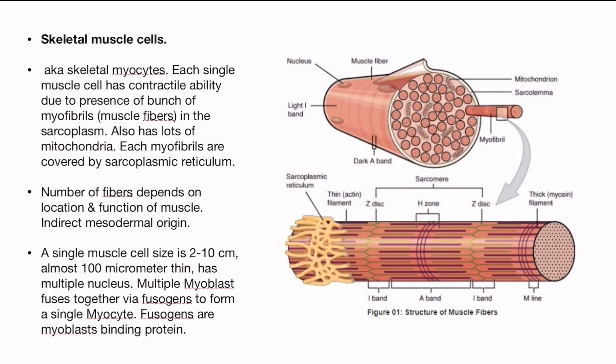Number of myofibrils depends on the location and function of the muscle, and same indirect mesodermal origin. Matlab ek manks kochika ke andar kitne saray fiber rahenge, woh depend karta hai ke aapka pura manks peishi shereer ke kis jagah par hai, kitna bara size hai aur kitna zyada kaam karta hai. The size of a single myocyte is two to ten centimeters and almost 100 micrometers thin.